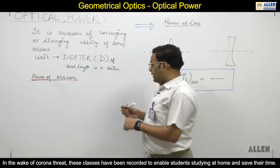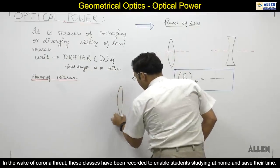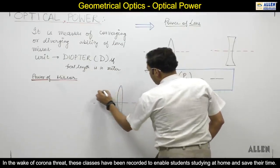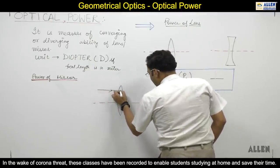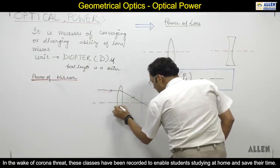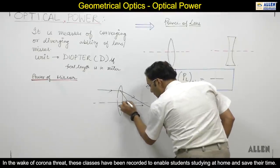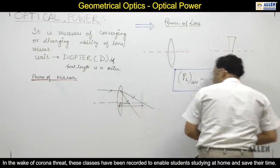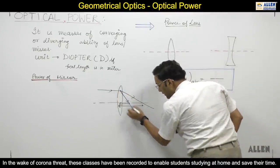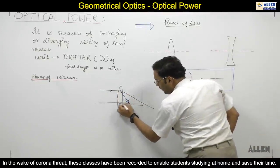I will explain you through a ray diagram. Let's suppose this lens is okay. Now these are the parallel rays here. If this lens is so far, it's converging. Or another lens is so far, it's so far.